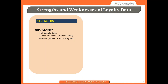By far the biggest strength of this shopper data is its granularity. Because there are tens of thousands and in some cases millions of sample panelists, you get an extraordinarily robust database. You can get very granular because of the high sample sizes — you can do weekly analysis, whereas in syndicated data you're looking at quarterly or annually for statistical validity. Or you can get granular at the item level, whereas syndicated panel usually constrains you to brand or segment views.